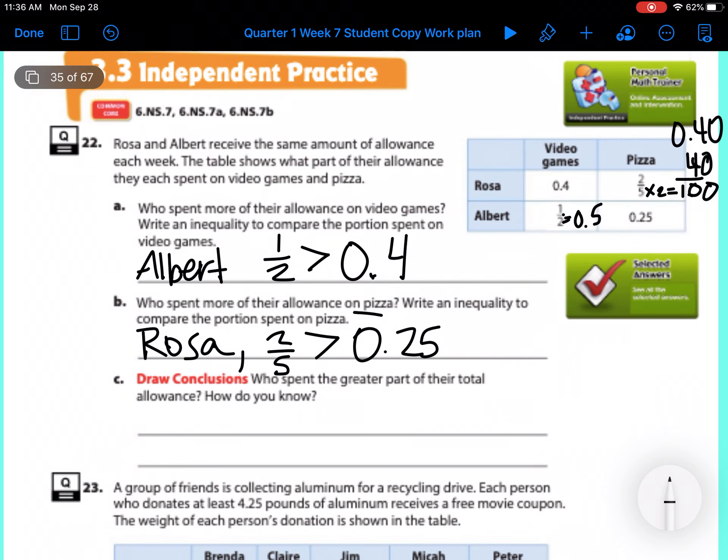So who spent the greater part of their total allowance? How do you know? You have to add their two numbers together. So we have 0.4 and 0.4 for Rosa. 0.4, 0.4, you add it together. 4 plus 4 is 8. Bring down our decimal. Bring down our 0. So she spent 0.8.